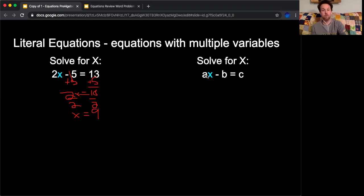I gave you this literal equation that looks very, very similar to 2x minus 5 equals 13. I just replaced the 2 with A, the negative 5 with B, and 13 with C.